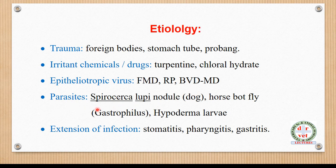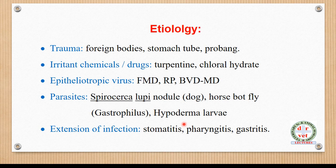Parasitic diseases also cause esophagitis. Spirocerca lupi in dogs produces nodules in the wall of the esophagus. The horse bot fly, Gasterophilus, and hypodermal larvae are also implicated. Extension of infection from neighboring organs — such as stomatitis, pharyngitis, and gastritis — can also cause esophagitis.